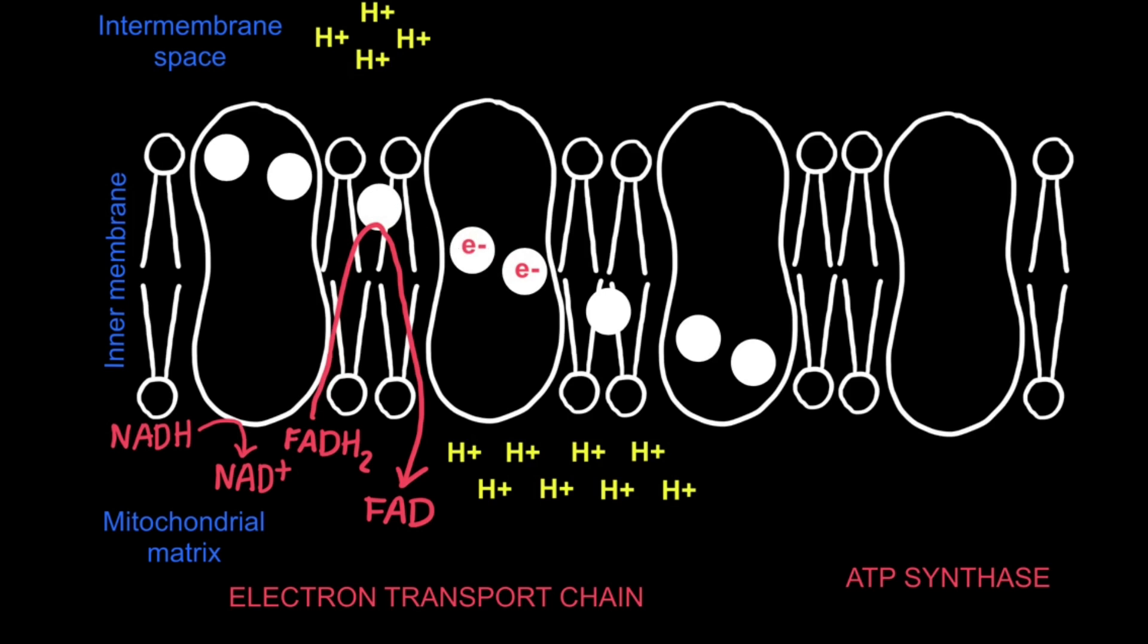These electrons continue to pass down the series of electron carriers and with each successive carrier release energy. This energy continues to be used to pump protons or hydrogen ions from the mitochondrial matrix into the intermembrane space.